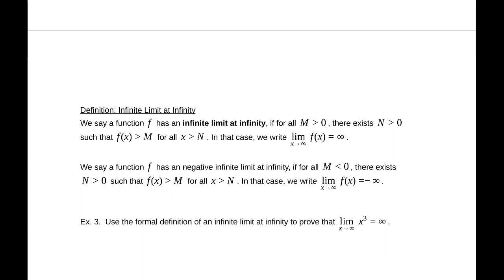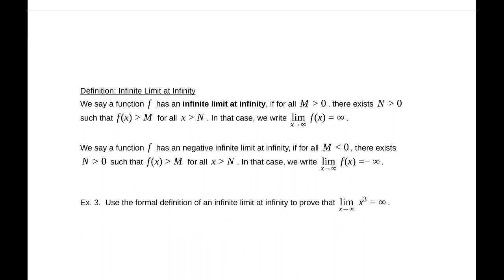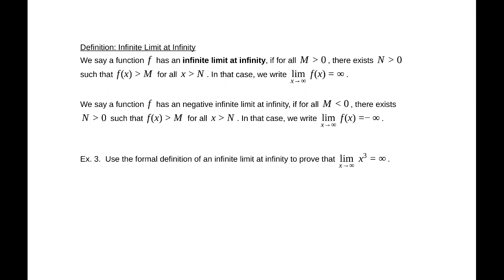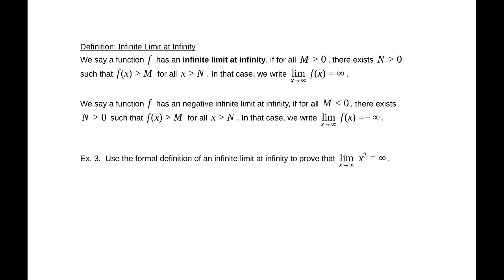The formal definition for infinite limits says: if for all M > 0 there exists an N > 0 such that f(x) > M for all x > N, then we write the limit as x approaches infinity of f(x) equals infinity. We're going to use that to show that the limit as x approaches infinity of x³ equals infinity.